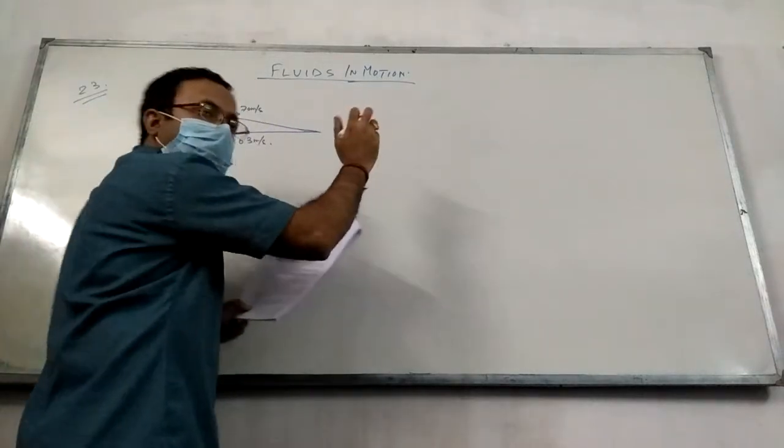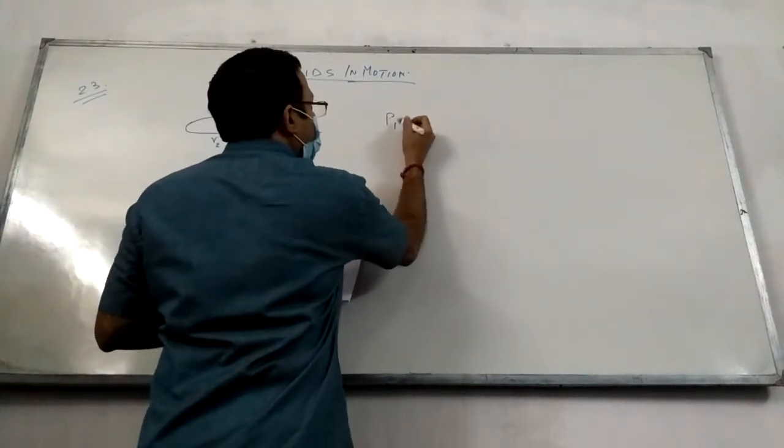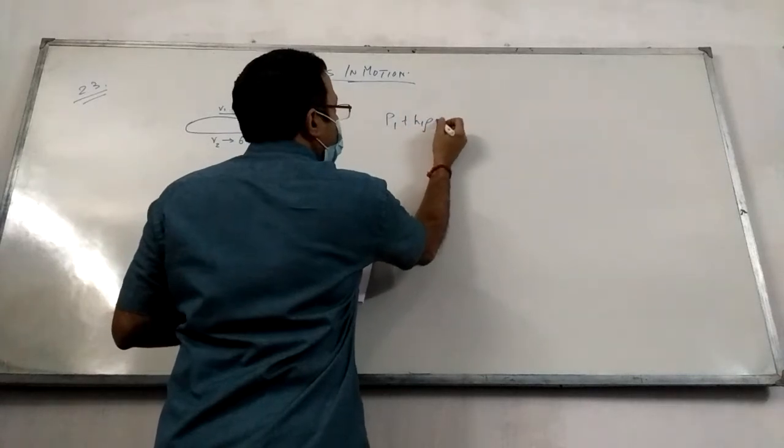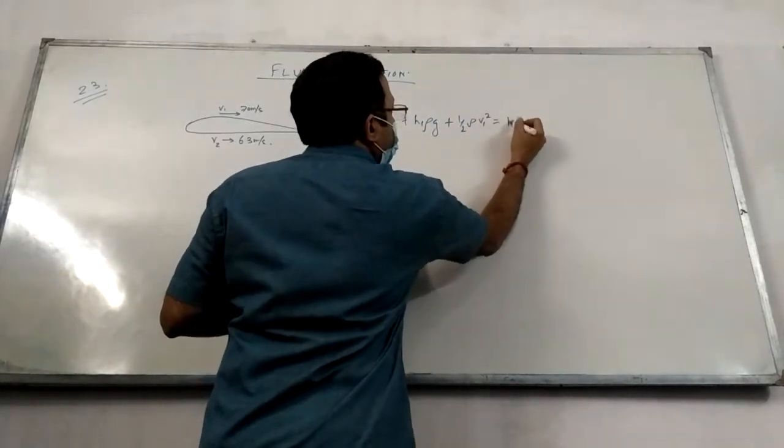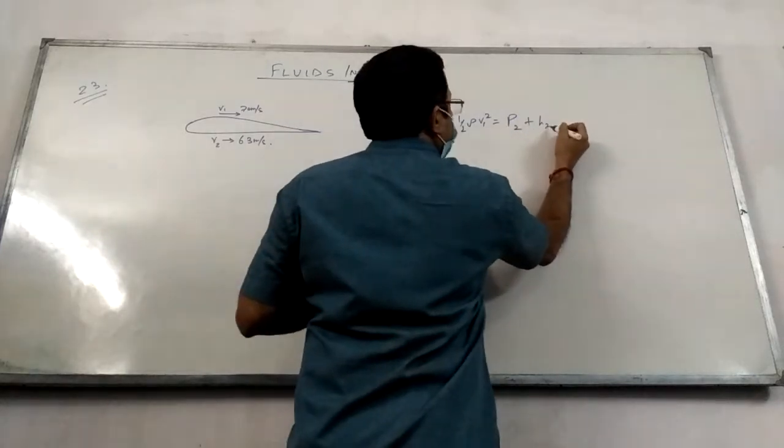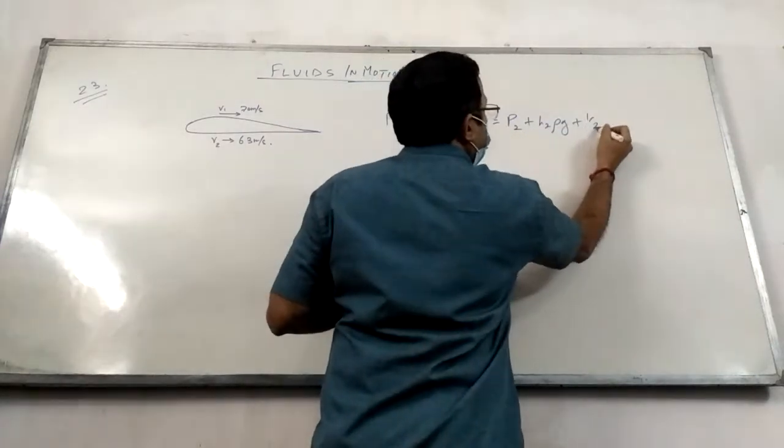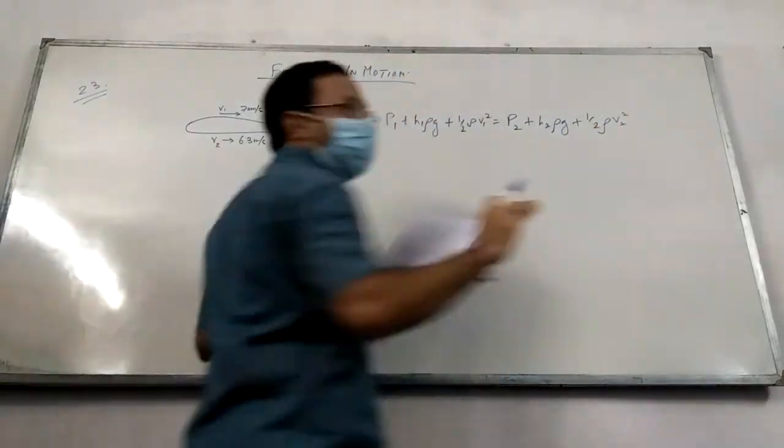So by Bernoulli's theorem, P1 plus h1 rho g plus 0.5 rho V1 square equals P2 plus h2 rho g plus 0.5 rho V2 square.